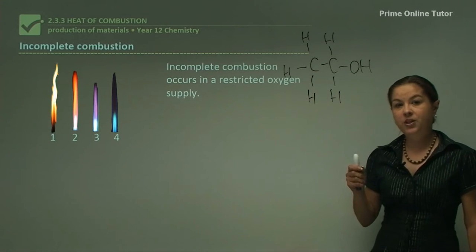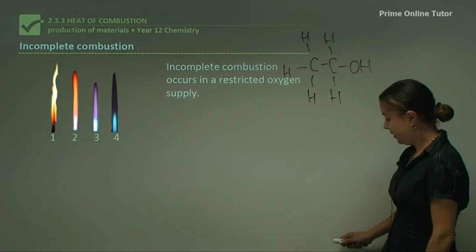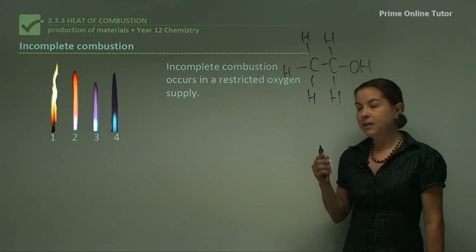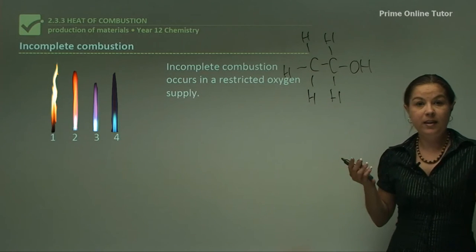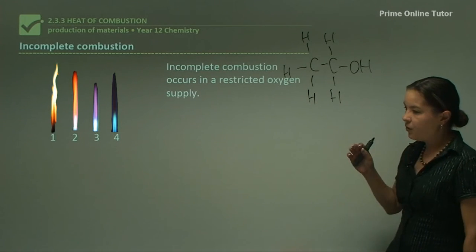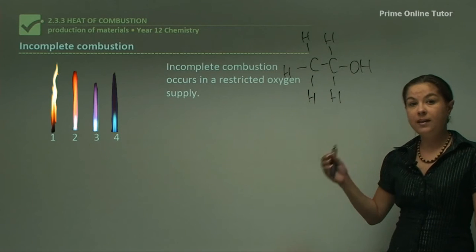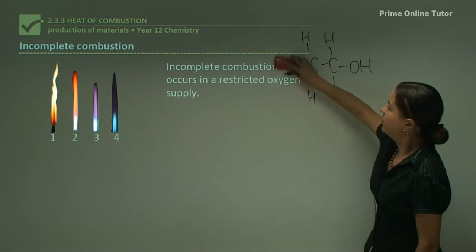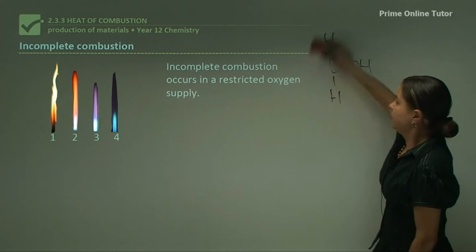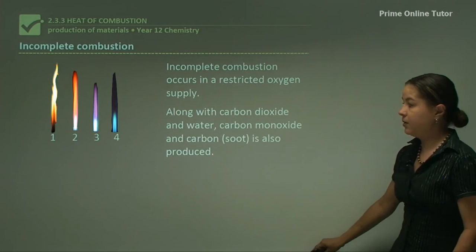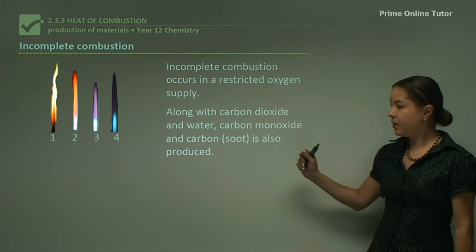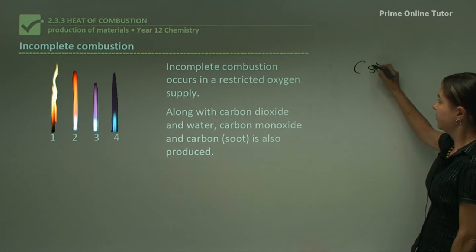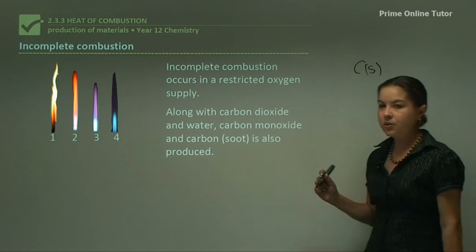The other type of combustion is incomplete combustion, which occurs in a restricted oxygen supply, such as in air where it's mainly nitrogen. Not all of the alkanol will turn into carbon dioxide and water — we get some different products. Along with carbon dioxide and water, carbon monoxide and carbon soot, which is carbon solid particles like the black soot you see in chimneys, is also produced.